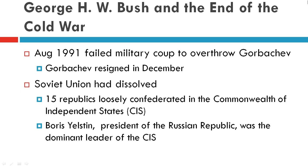In 1991, there was a failed military coup to overthrow Gorbachev, and he would resign a few months later in December of 1991. At that point, the Soviet Union had dissolved and the 15 republics formed a loosely confederated group — the Commonwealth of Independent States.